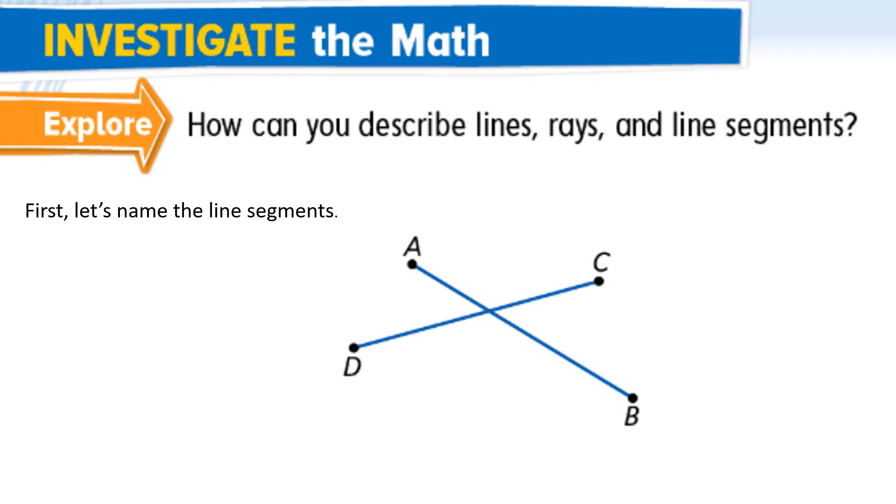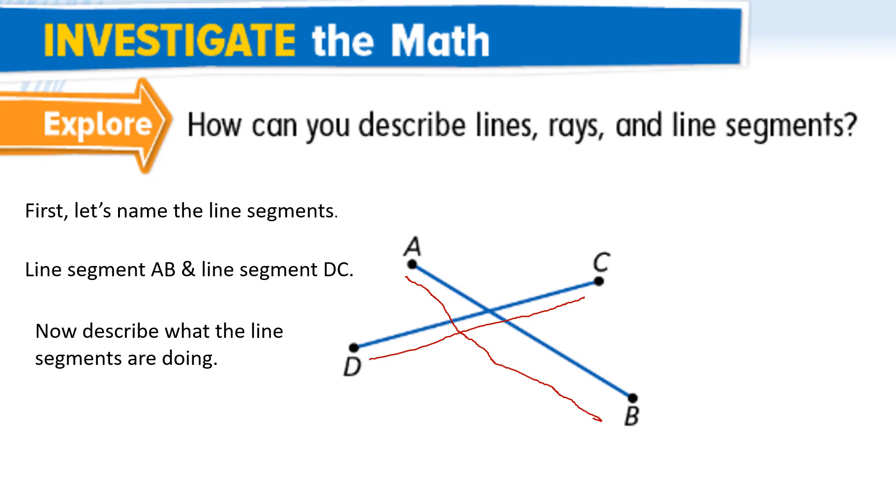Do you see that there are endpoints at the end of each one? So all you need to do is look at the two letters. And so we have line segment AB right here. And then we have line segment DC right there. Now describe what the line segments are doing. What are those two lines doing? They're crossing, right? And in math today, we're going to call that intersecting. We have two intersecting line segments.